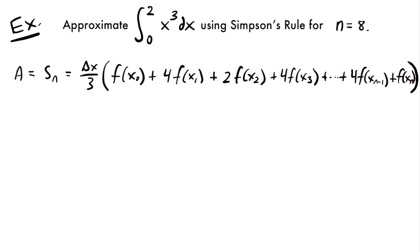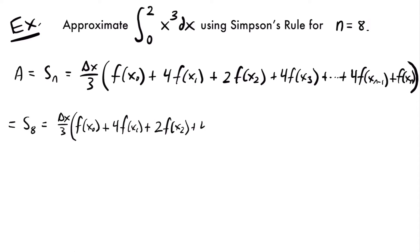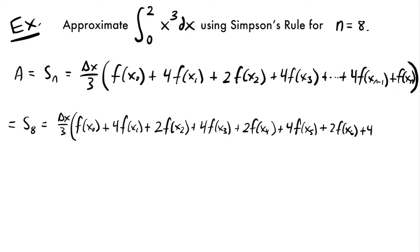Since n is equal to 8, we'll have S sub 8 equal to delta x divided by 3, times f of x sub 0, plus 4 times f of x sub 1, plus 2 times f of x sub 2, plus 4 times f of x sub 3, plus 2 times f of x sub 4, plus 4 times f of x sub 5, plus 2 times f of x sub 6, plus 4 times f of x sub 7, and then we add f of x sub 8. Our first and last terms are only multiplied by 1.